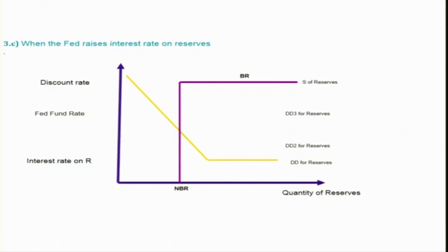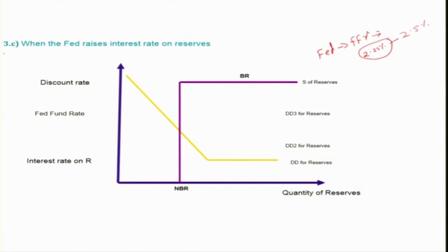In this session we will continue using these tools and also discuss what criteria the Fed uses in determining the Fed funds rate. The remaining part from our previous session is: what if the Fed changes the interest rate on reserves? When the Fed announces the FFR, they announce a target rate with a lower limit and upper limit — for example, 2.25% is the lower limit and 2.5% is the upper limit. The interest rate on reserves ensures the Fed funds rate never goes below this lower limit.